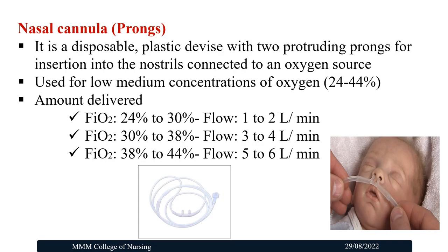Now we will see in detail the types of Oxygen Administration. First is the Nasal Cannula, otherwise called Nasal Prongs. It is a disposable plastic device with two protruding prongs inserted into the nostrils, connected to an Oxygen source. Oxygen concentration is about 24–44% at 1–2 litres per minute; 30–38% at 3–4 litres per minute; and 38–48% at 5–6 litres per minute.